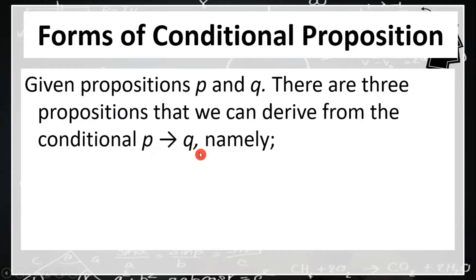Given propositions P and Q, there are three propositions that we can derive from the conditional P implies Q, where P is our hypothesis or the antecedent and Q is our conclusion or the consequent.